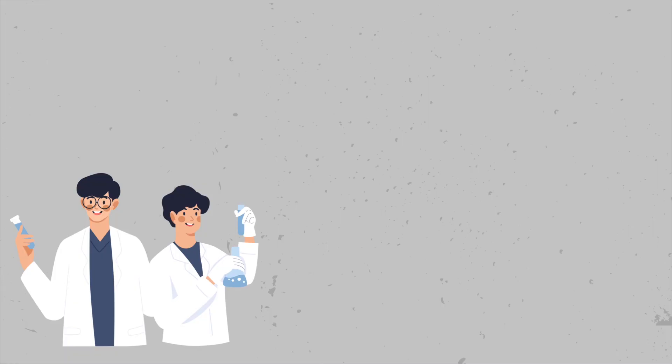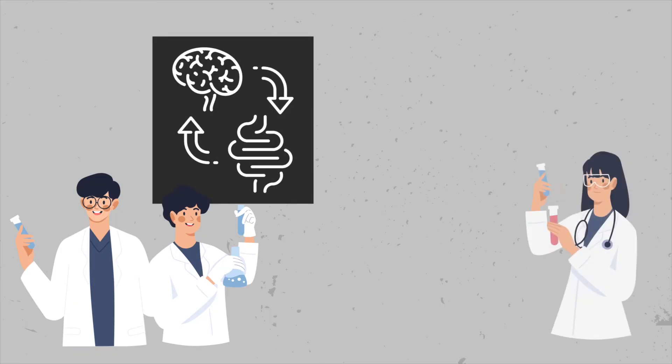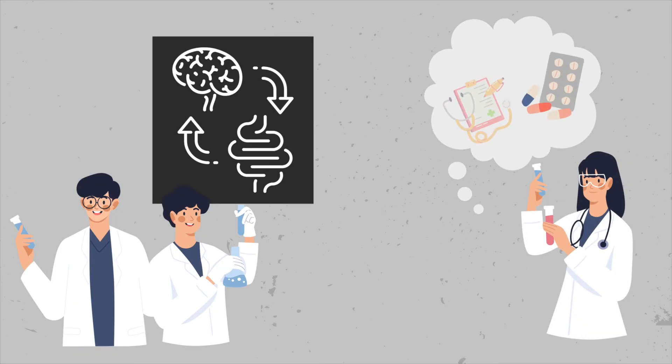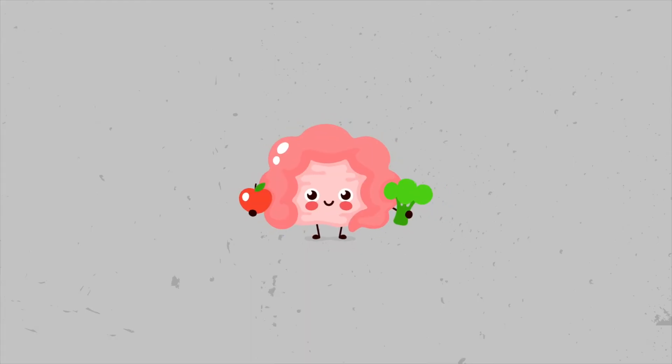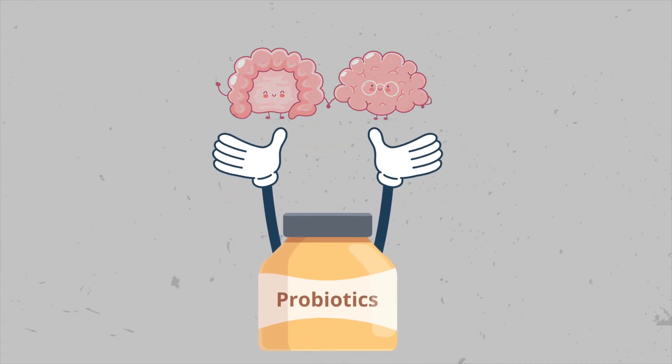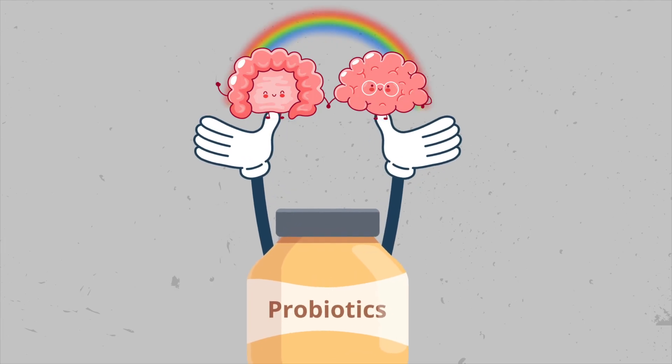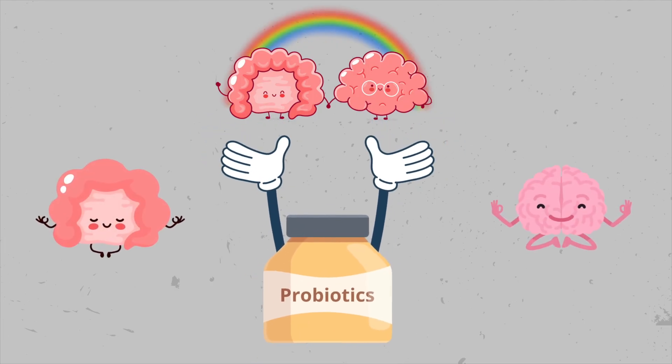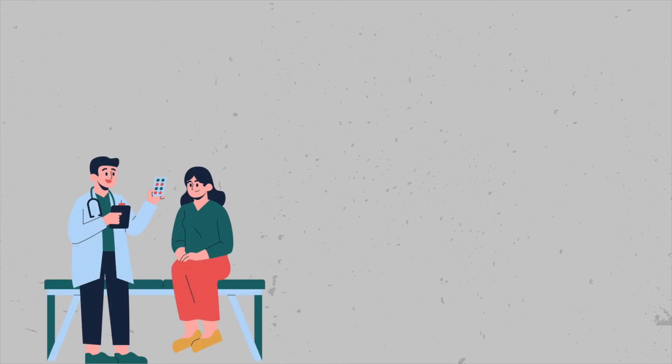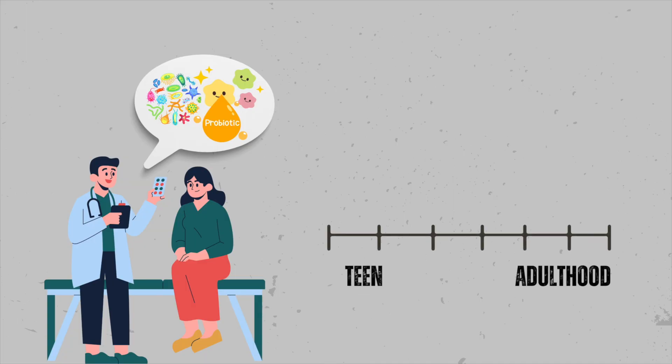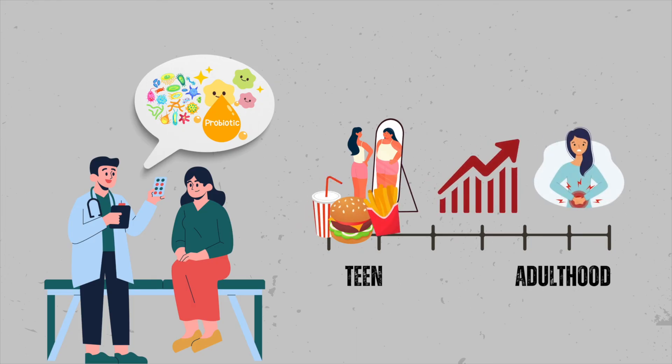Scientists are just scratching the surface of the gut-brain axis. Ongoing research aims to develop new treatments for mental health disorders by targeting gut health. For example, probiotics and prebiotics are being studied for their potential to restore a healthy microbiome balance and improve mental health outcomes. Personalized medicine approaches may soon tailor treatments based on individual gut microbiomes. Furthermore, researchers are uncovering how issues like abnormal body image and eating disorders during adolescence can significantly raise the risk of developing IBS and other gastrointestinal problems in adulthood.